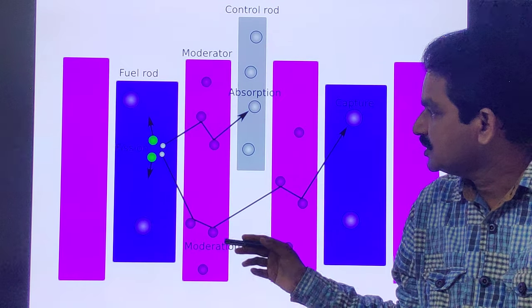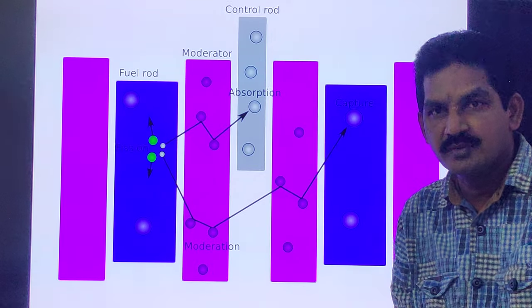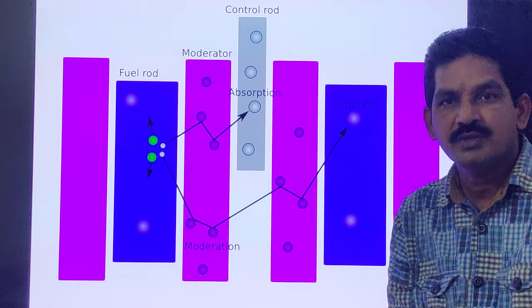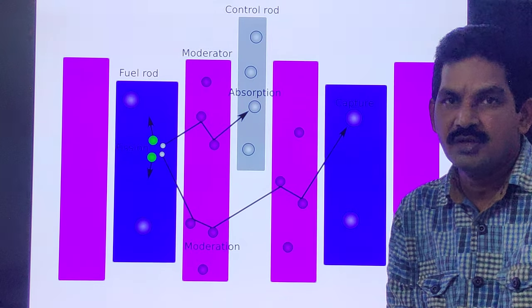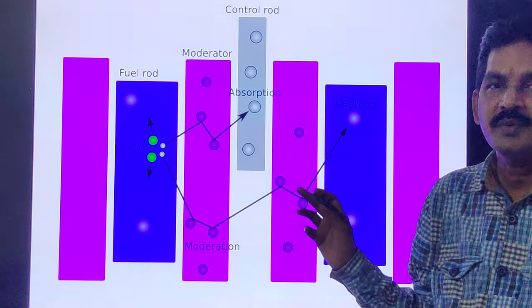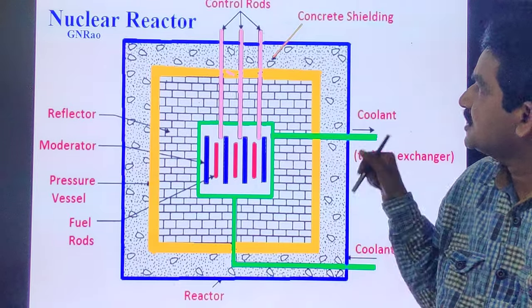Shielding: During nuclear fission, alpha, beta, and gamma particles and neutrons are also produced. They are harmful to human life. Therefore, it is necessary to shield the reactor with a thick layer of lead or concrete to protect both the operating personnel as well as the environment from radiation hazards.